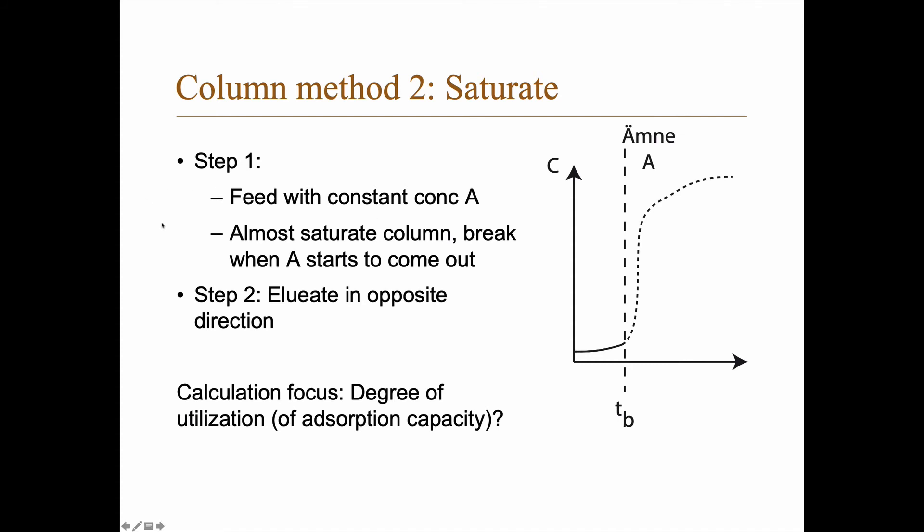So here you instead feed with a constant concentration of A. So you start with a column which is regenerated, so essentially nothing absorbed. And then you feed it with a constant concentration of A, and you continue until you almost have saturated the column, and the substance A starts to come out, and then you elute the adsorbed material by letting some liquid or gas, if you have gas adsorption, flow in the opposite direction.